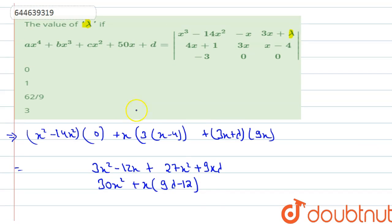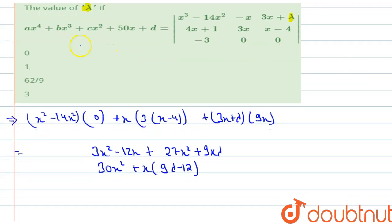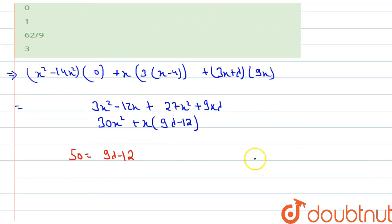Now the coefficient of x on this side is 9 lambda minus 12 and this side is 50. So 50 will be equal to 9 lambda minus 12.